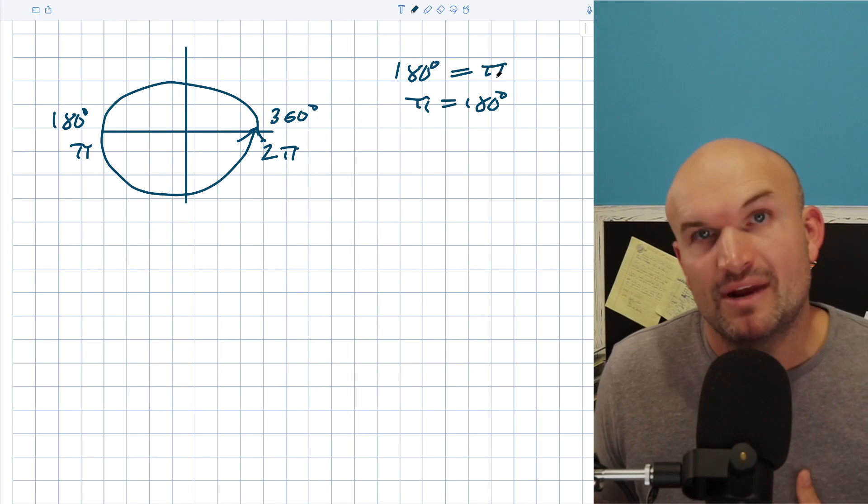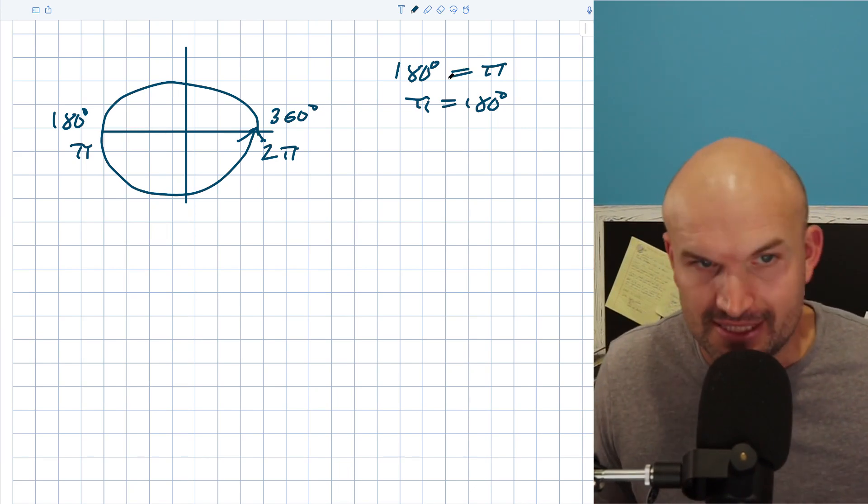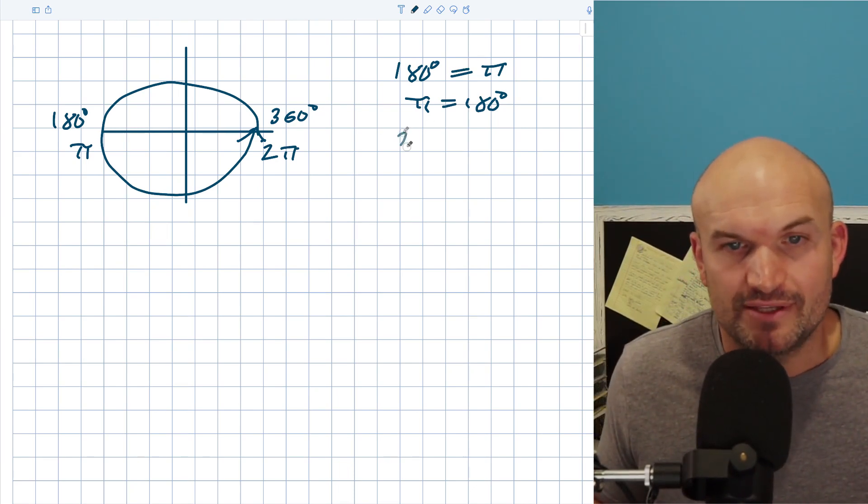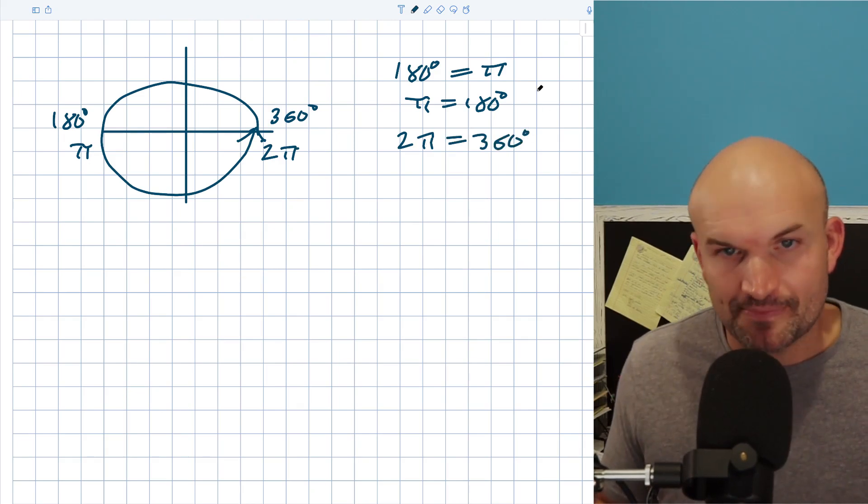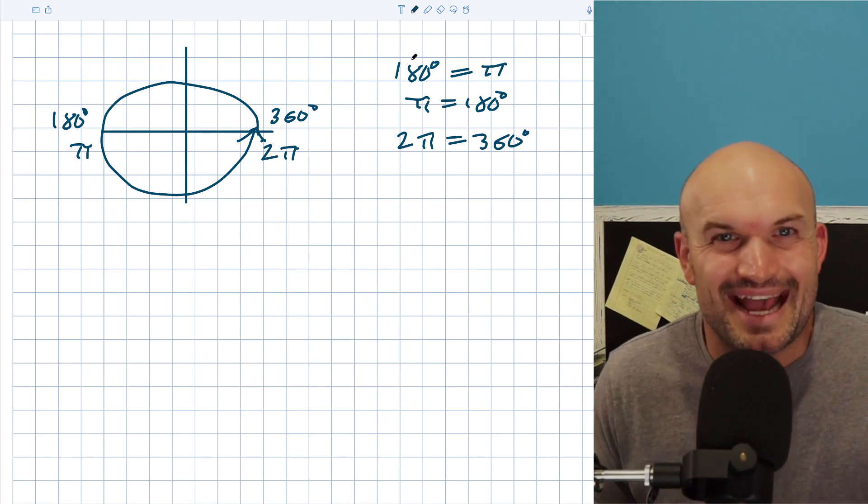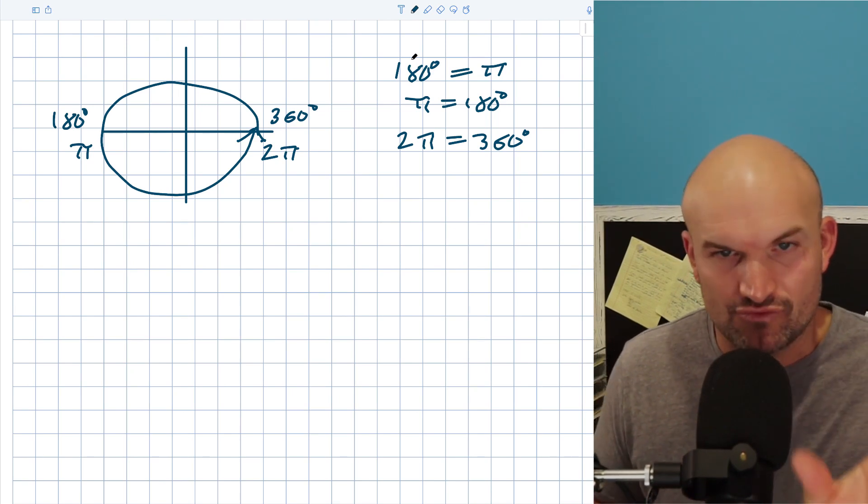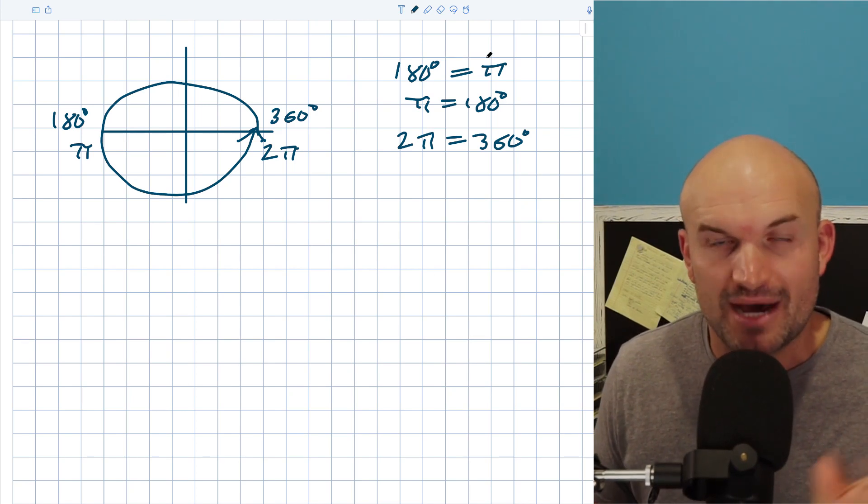It doesn't matter which way I say it or which way I write it. You agree that these are exactly the same. And the same thing could also be said with 2π and 360. 2π is equal to 360 degrees. This is what we call our conversion ratio, but it's not written as a ratio right now. It's just written as an equation. 180 degrees is equal to π.